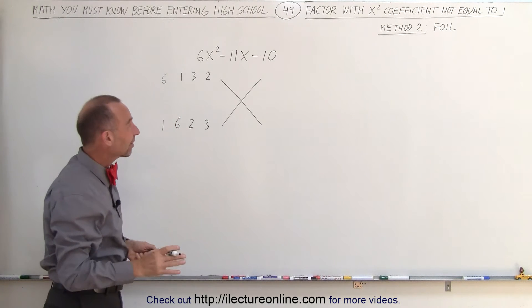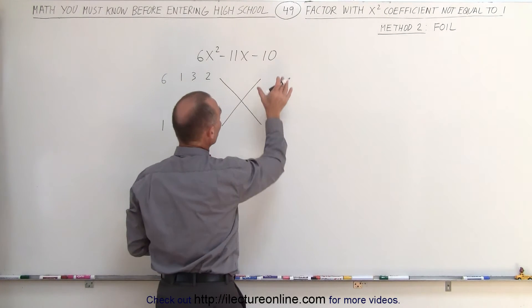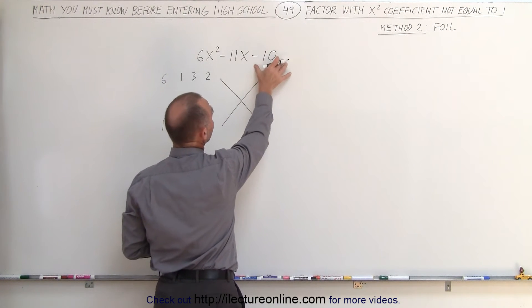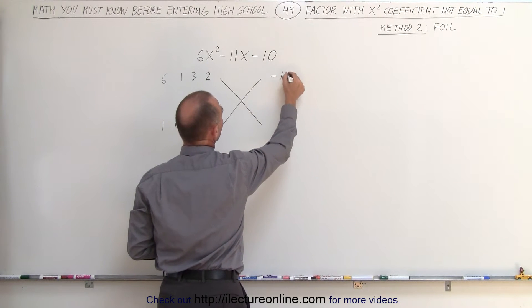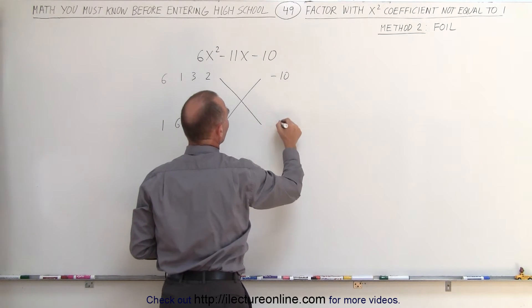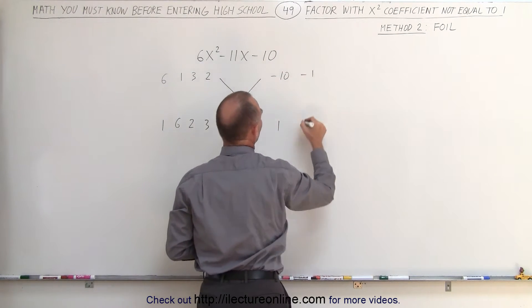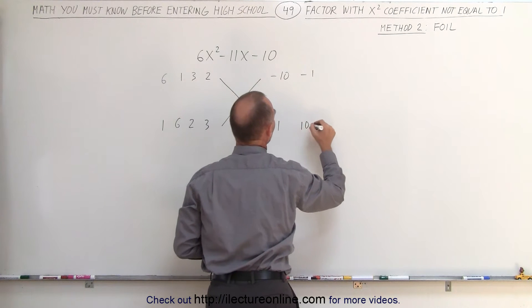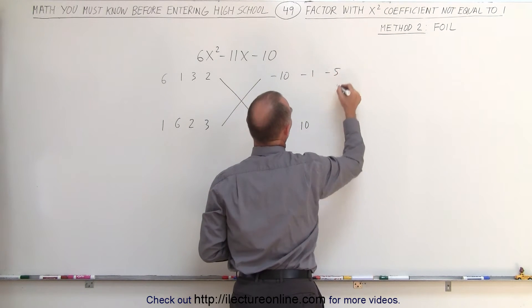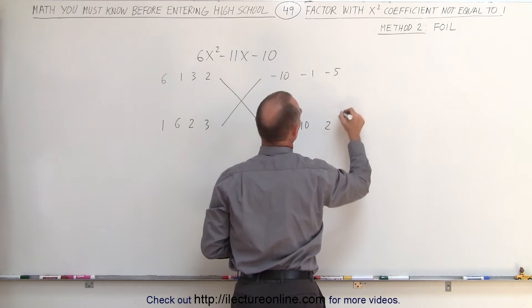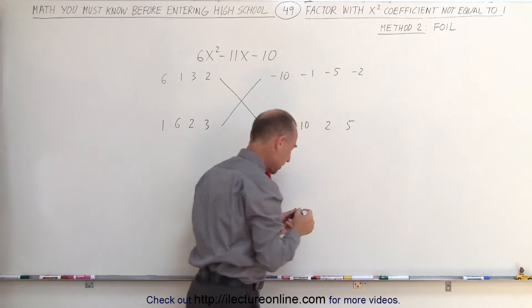On the right side we're going to do the same thing. We need two numbers that when multiplied together give us negative 10, which means negative 10 times 1, or negative 1 times 10, or negative 5 times 2, or negative 2 times 5.